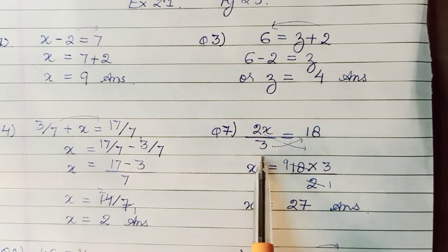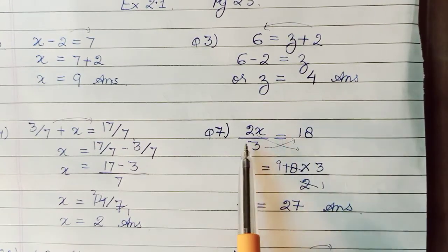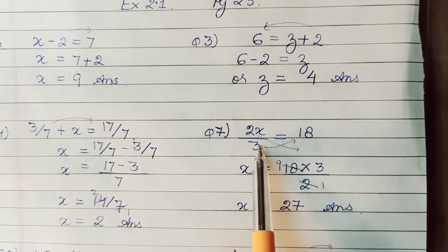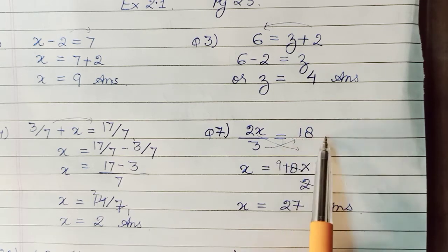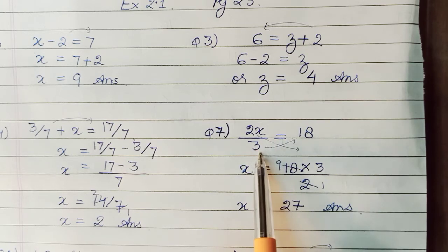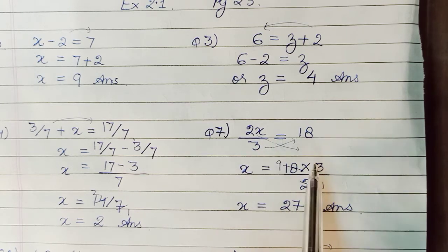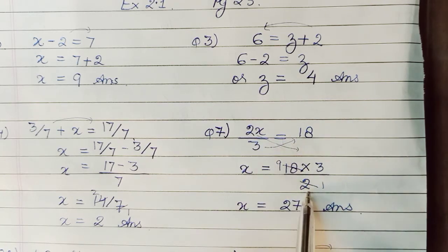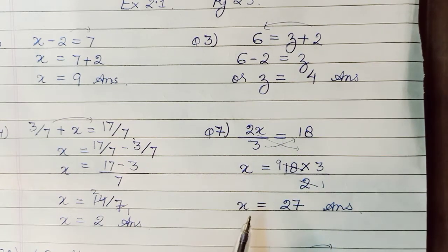Seventh example. 2x upon 3 equals 18. Again, if we need x, then whatever x is equal to everything. So 3 has to be removed from here. It was in denominator on the left side. So when it will go to the right, it will come in numerator. Or if you say it was in denominator, it was dividing here. So to the other side, it will multiply. And this which was being multiplied here will to the other side divide. Or from numerator, it will come to denominator.